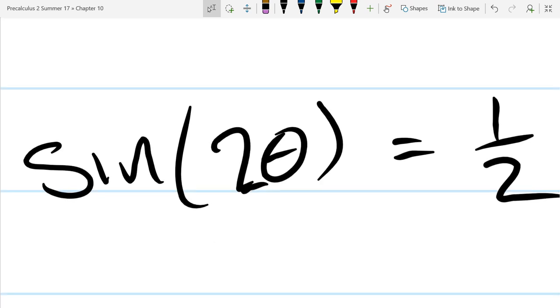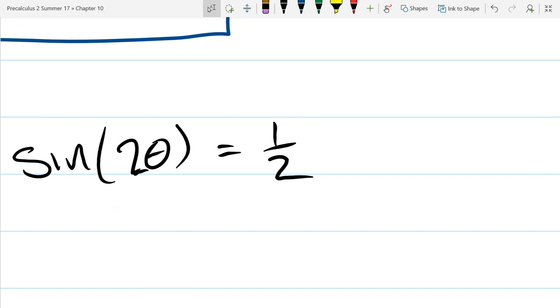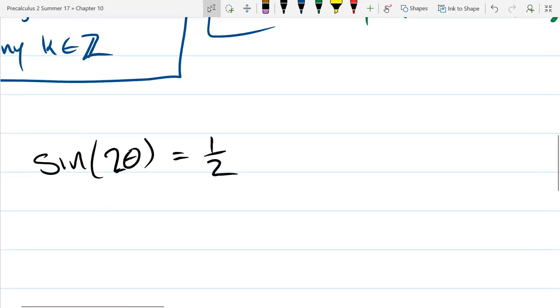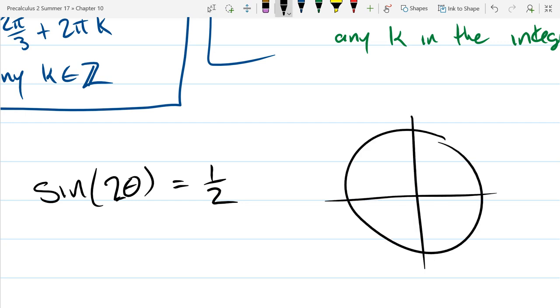The thing that's a little strange is it's not just sine theta. It's sine of two theta or sine of twice theta. So let's just think about the sine function. Sine again is a y value and I want to know when is a y value positive one half. Unit circle.